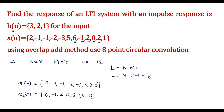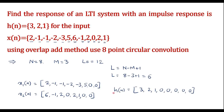The next step is to make the length of h(n) also equal to 8. That can be done by adding L − 1 = 5 zeros to h(n). Therefore the new h(n) is equal to 3, 2, 1 followed by 5 zeros. Now we can see that the length of h(n) is also 8.